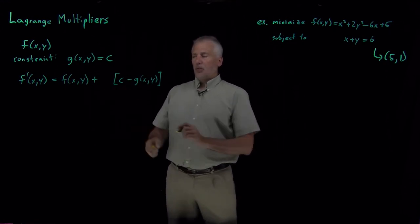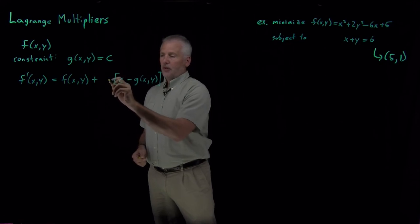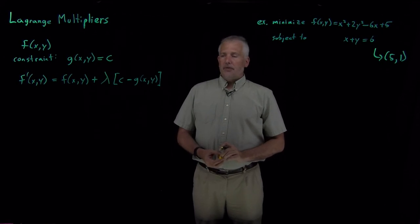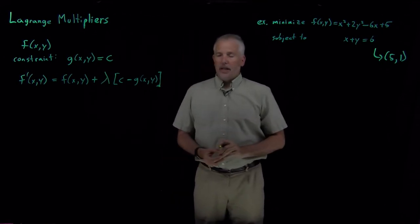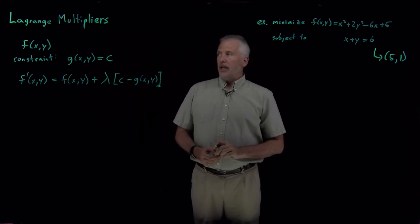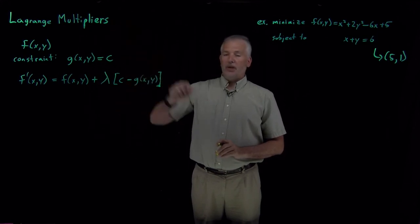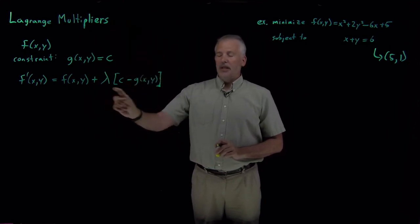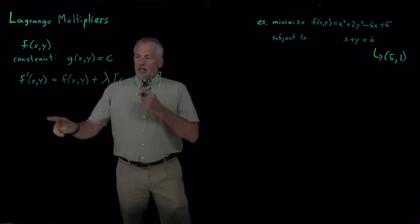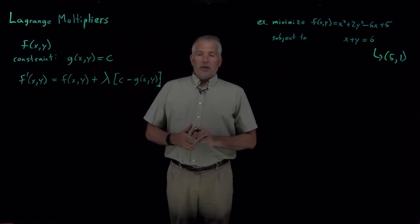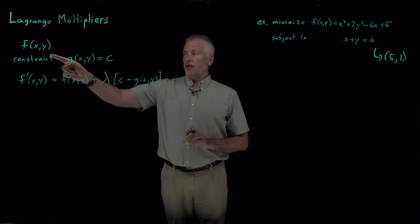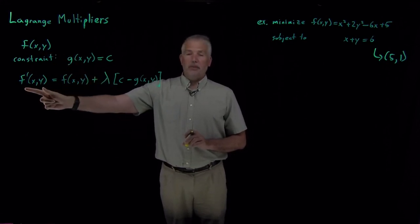We can add zero to the function not just once, but multiplied by any constant we want. So we stick a constant lambda in front of that bracketed quantity. Again, if we're obeying the constraint, we've just added zero some arbitrary number of times. This method is called the method of Lagrange multipliers, and lambda is called the Lagrange multiplier. As long as we're obeying the constraint, we haven't perturbed the function at all, so the minimum of f subject to the constraint is also the minimum of f'.